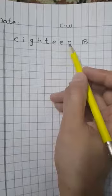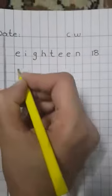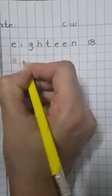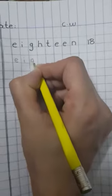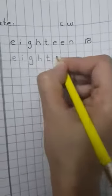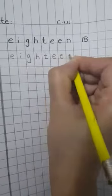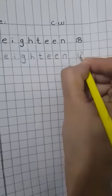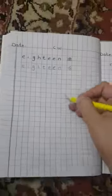E-I-G-H-T double E-N, 18. Write this spelling also on the whole page and learn this spelling also orally.